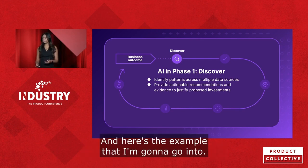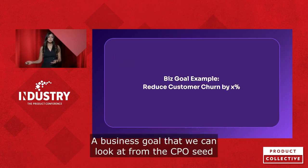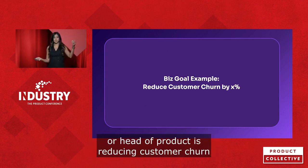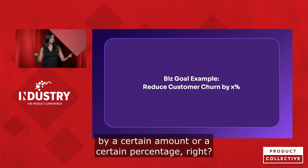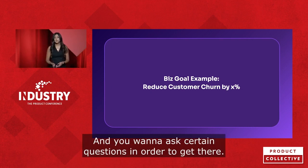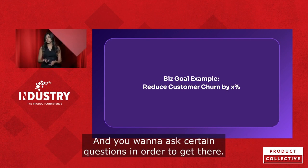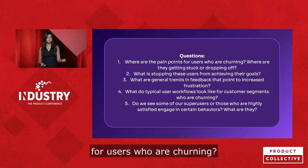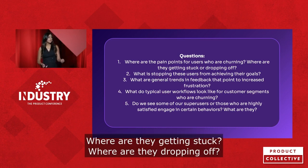And here's the example that I'm going to go into. A business goal that we can look at from the CPO seat or head of product is reducing customer churn by a certain amount or a certain percentage. And you want to ask certain questions in order to get there. Some of these questions are: where are the pain points for users who are churning? Where are they getting stuck? Where are they dropping off?